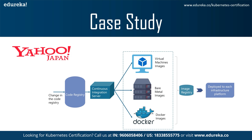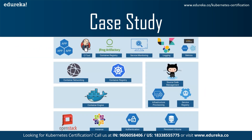For a better understanding, we have a diagram here. When the code is changed at the code registry, bare metal images, Docker containers and virtual machine (VM) images are created by continuous integration tools, pushed into the image registry, and then deployed to each infrastructure platform. Focusing on the container workflow to understand how they used Kubernetes as a deployment platform: the platform architecture shows OpenStack instances used with Docker, Kubernetes, Kelsey, and etcd on top to perform various operations like container networking and container registry.